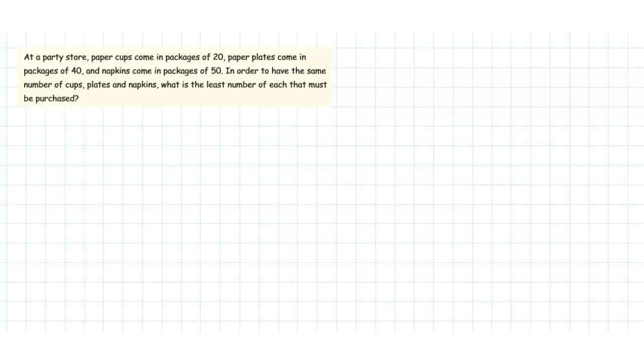Hello everyone, welcome to my channel, The Colors of Mathematics. We have another problem from HCF and LCM class 5, so let's start. At the party store, paper cups come in packages of 20, paper plates come in packages of 40, napkins come in packages of 50. In order to have the same number of cups, plates, and napkins, what is the least number of each that must be purchased?